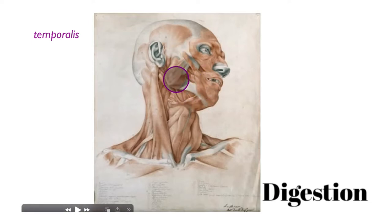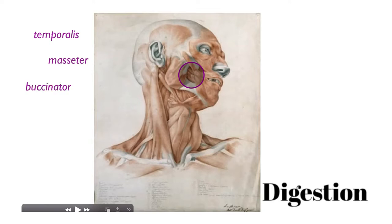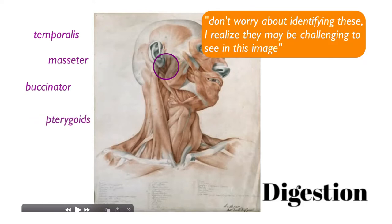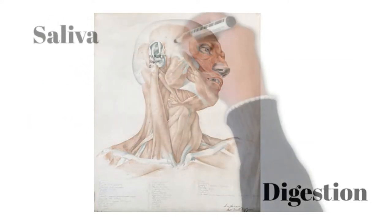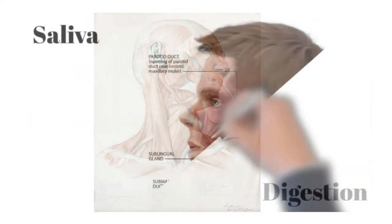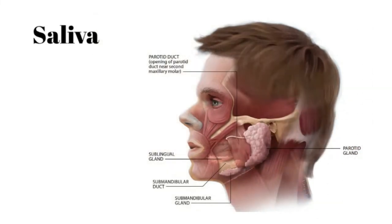This is the masseter muscle, a huge muscle of mastication. Right here is the buccinator running horizontally, and these are a group of muscles known as the pterygoid muscles, which attach to the pterygoid plates of the sphenoid bone.